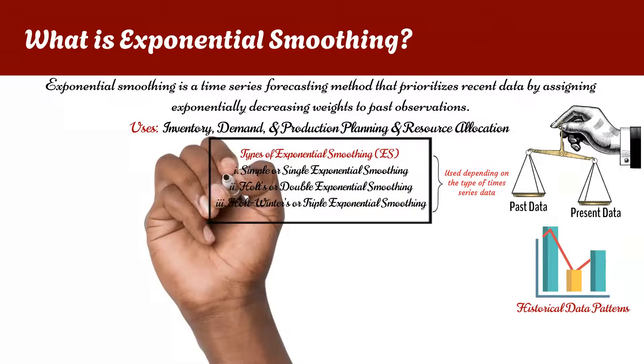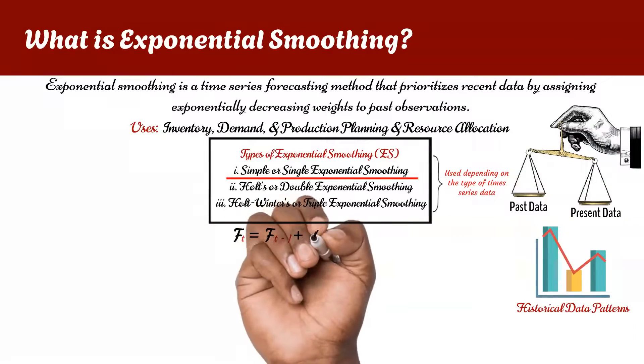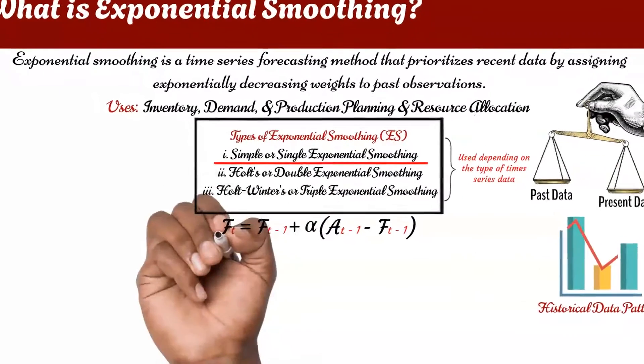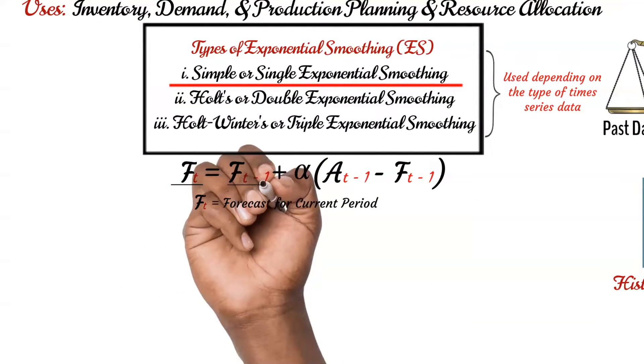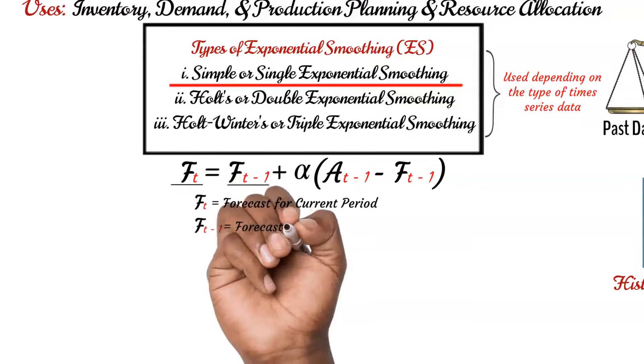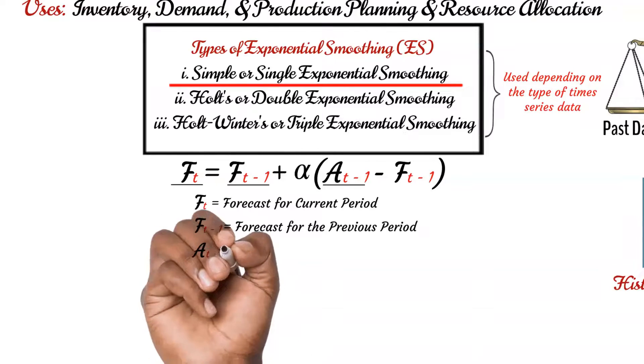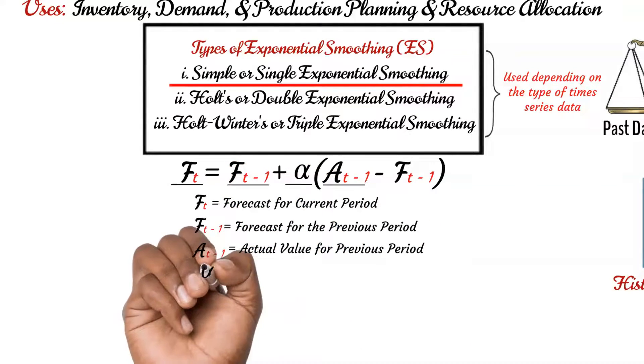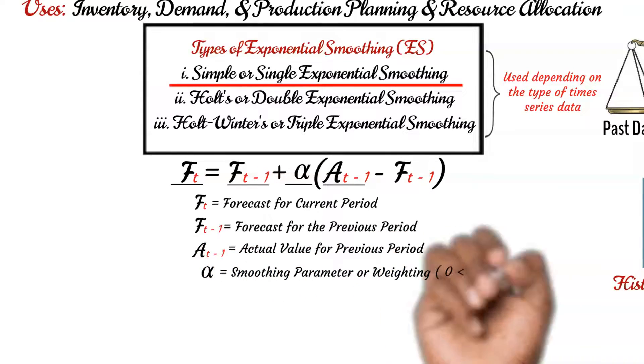For the video, we will be using the single or simple exponential smoothing technique, and the formula is shown here. FT is the forecast for the time period represented by T, while FT-1 is the forecast for the previous time period. AT-1 is the actual observation for the previous time period. As for alpha, this represents the weighting or the smoothing parameter. The alpha value normally ranges between 0 to 1.